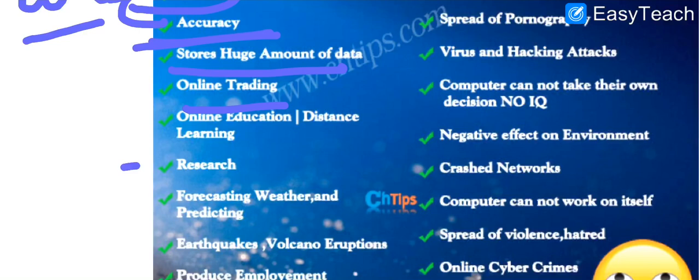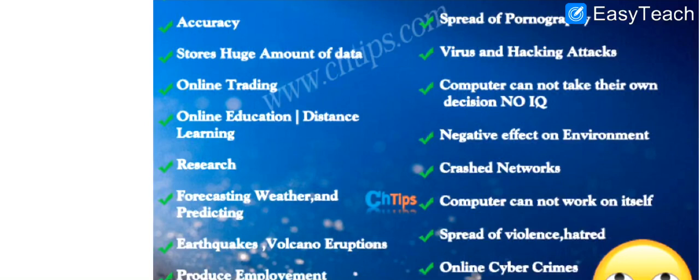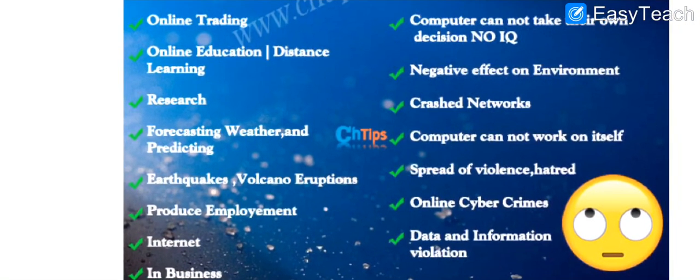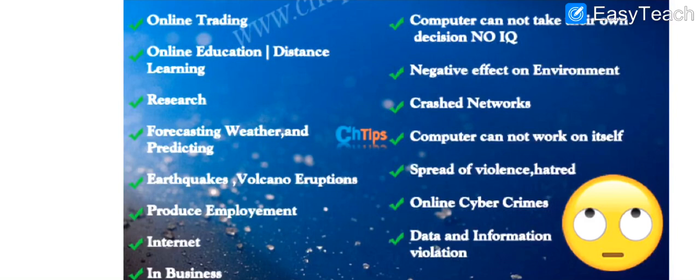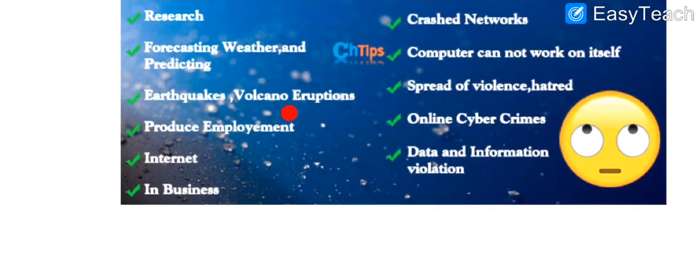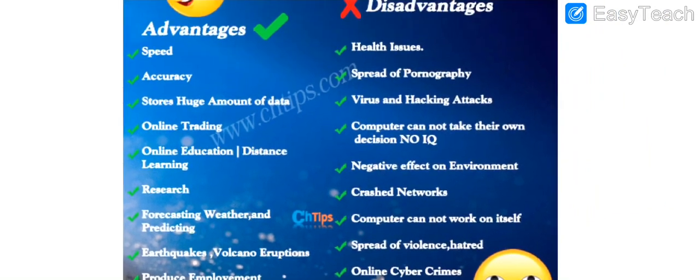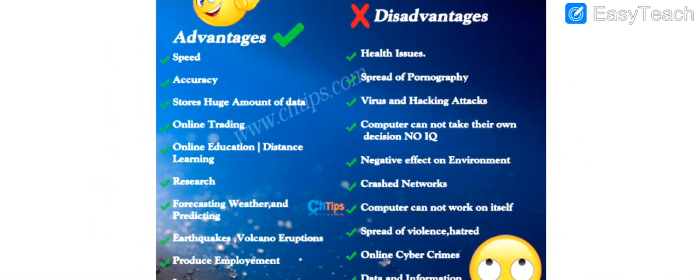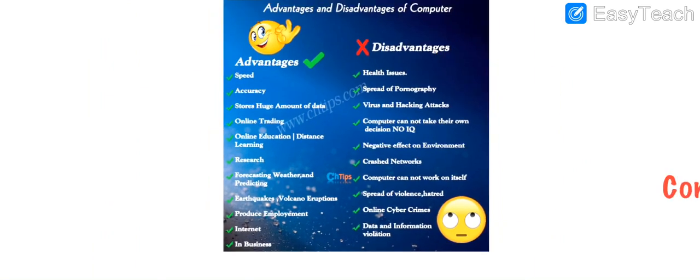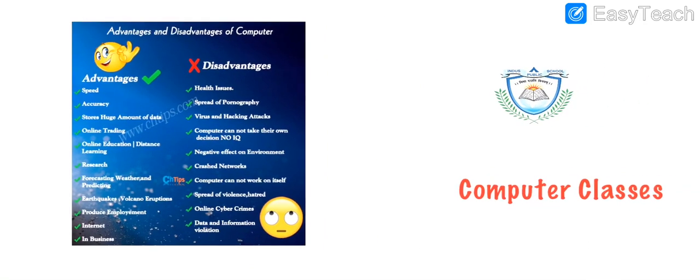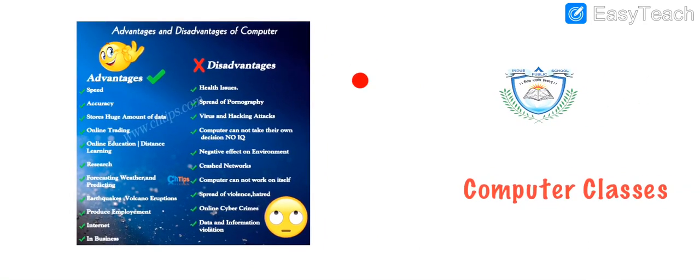It has online trading also. Online education, distance learning, forecasting weather. Computer can tell us about the weather also. What weather will be tomorrow? What weather is now? They can tell us about the earthquake, volcanic eruptions also. They can produce employment also, internet in business. Computer can be used everywhere in almost every field, but it has certain disadvantages also. Computer cannot be used everywhere and it is not the only source that we need to use and that we need to depend upon.